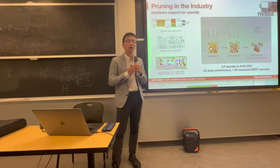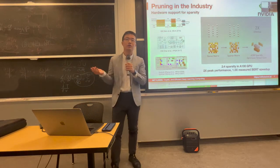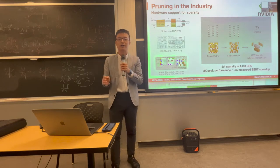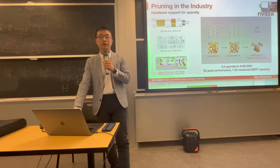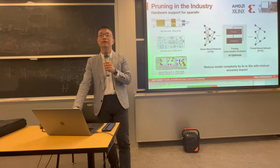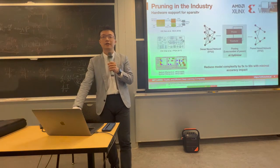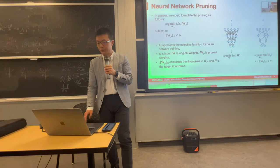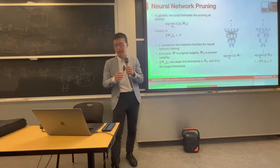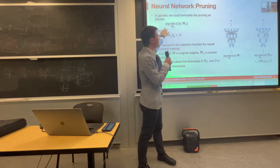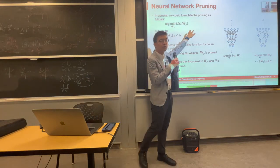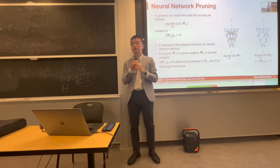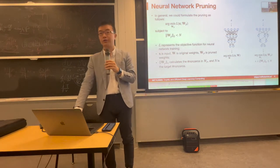For example, if you have an A100 GPU, 2:4 sparsity is already supported there. Xilinx is also using that. The setup is basically minimizing the loss function subject to the number of non-zero weights being smaller than a threshold.